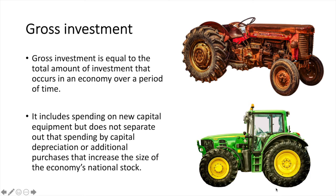For example, say a farmer replaces a tractor that has broken down due to depreciation and also purchases a brand new tractor in addition to the replacement one. The total of these two purchases together would count as gross investment. So gross investment equals replacement due to depreciation plus net investment.